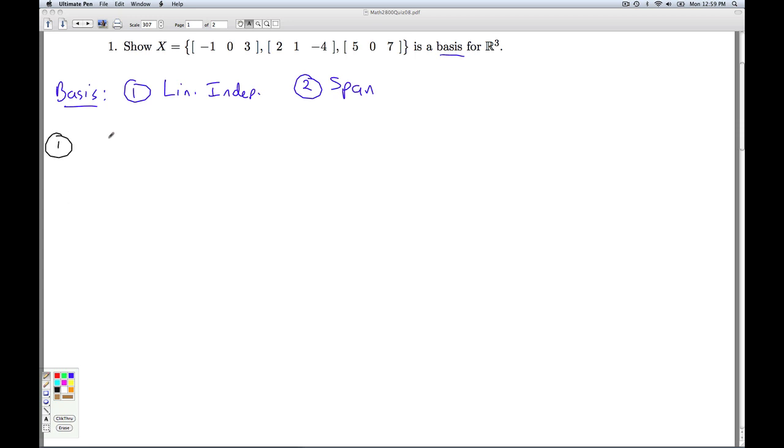So how do we show linear independence? We have to show that the only linear combination that gives me zero is when all the coefficients are zero. So let's take a linear combination of these three vectors.